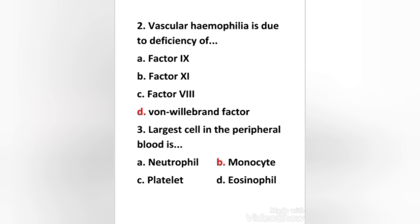Next question: vascular hemophilia is due to deficiency of factor 9, factor 11, factor 8, or von Willebrand factor? The right answer is option D: von Willebrand factor. It is a form of hemophilia discovered by Erik von Willebrand, a genetic disorder inherited as an autosomal recessive trait, characterized by a deficiency of coagulation factor and by mucosal bleeding.